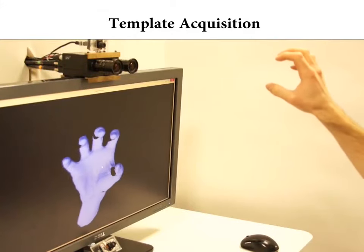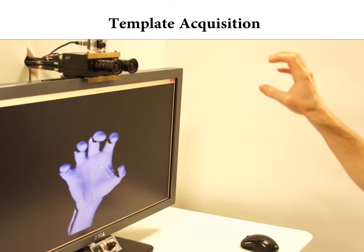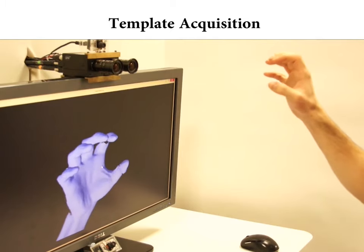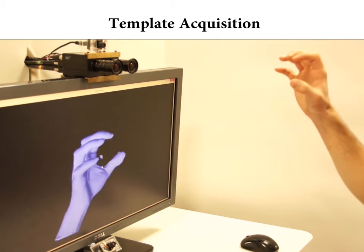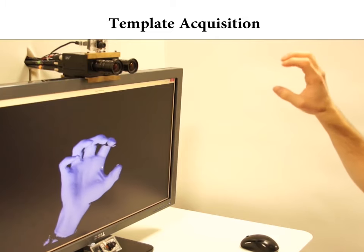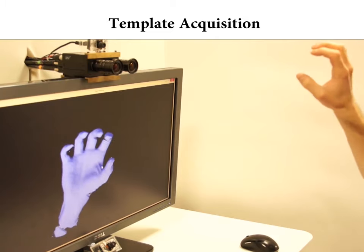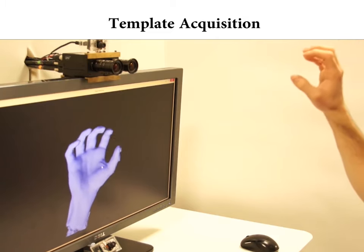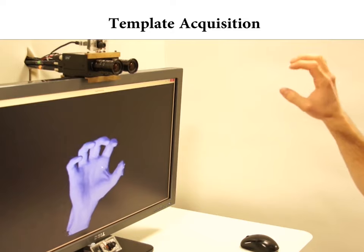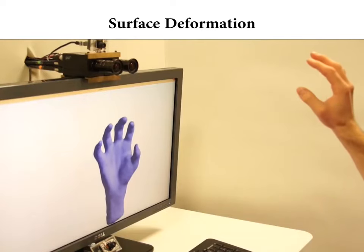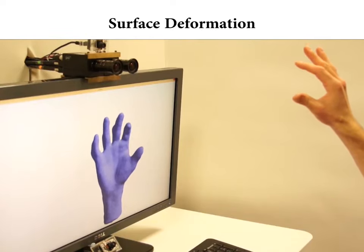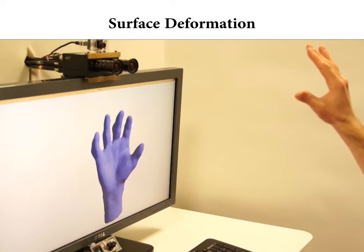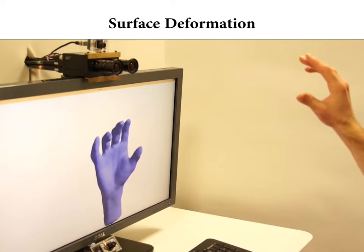Our deformation model is built from scratch for each object in under a minute. In this scenario, we generate the model of a human hand. Again, once the template is built, we start capturing non-rigid deformations. Note that our approach even recognizes fine-grained changes such as the motion of fingers.